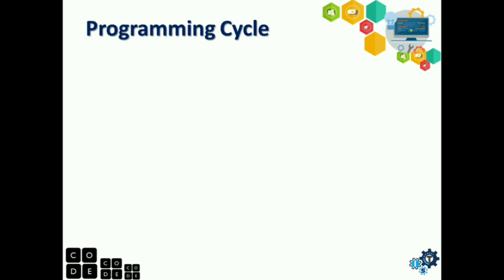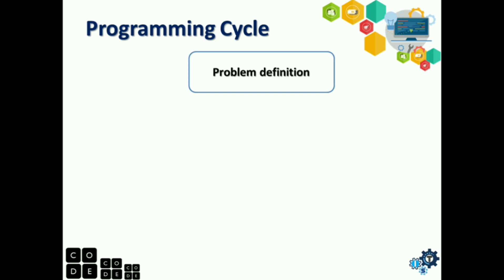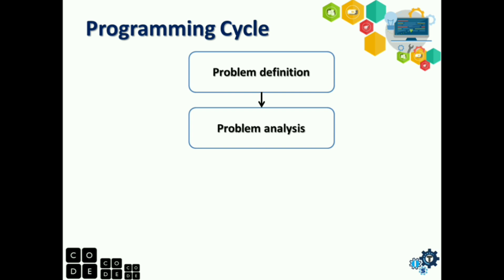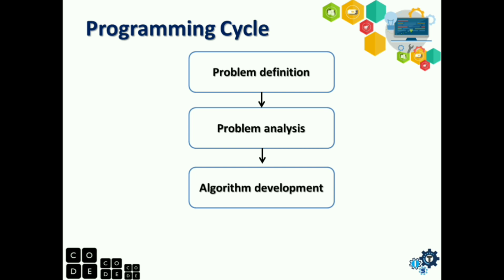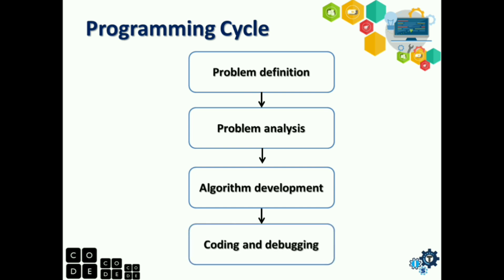The programming cycle has four stages. Number one, problem definition. Next, problem analysis. Then we have algorithm development. And lastly, coding and debugging.